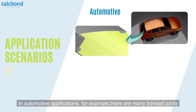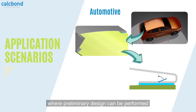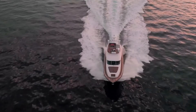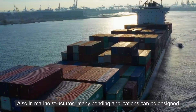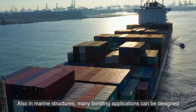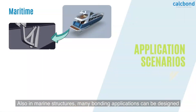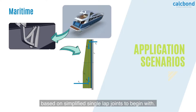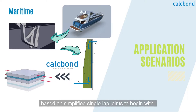In automotive applications, for example, there are many bonded joints where preliminary design can be performed using a simplified analytical approach. Also in marine structures, many bonding applications can be designed based on simplified single lap joints to begin with.